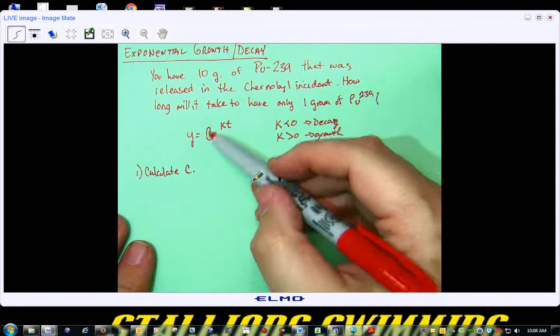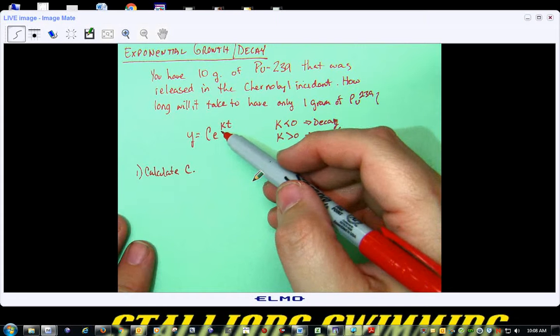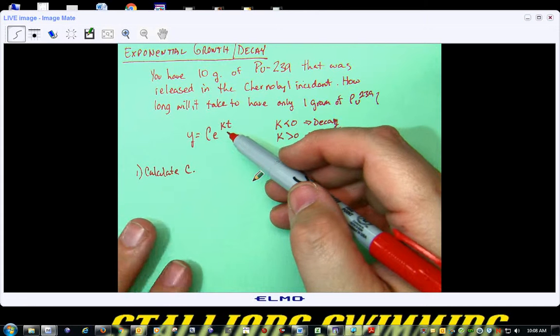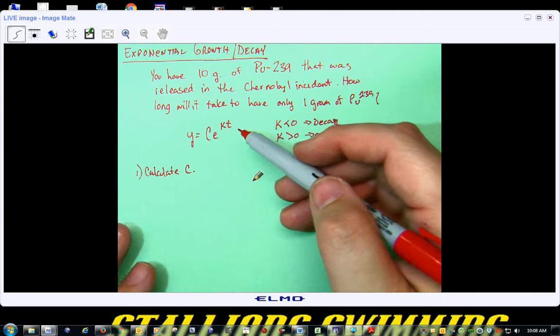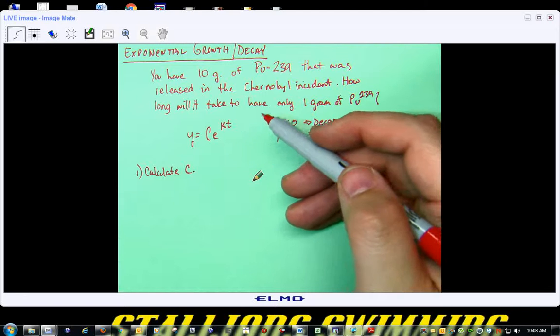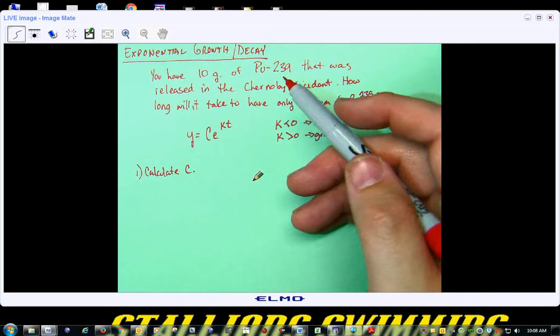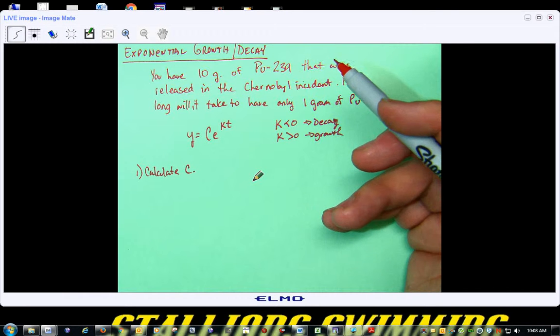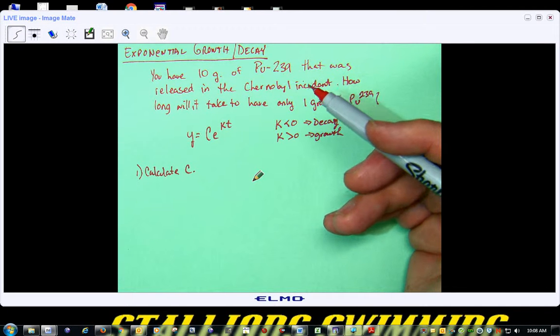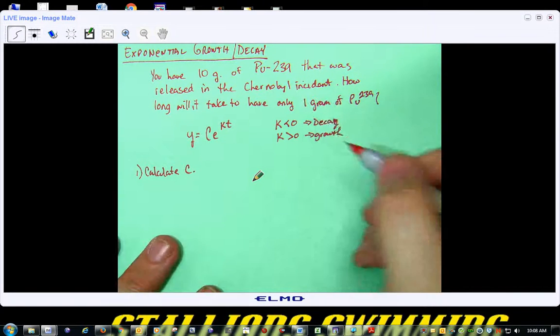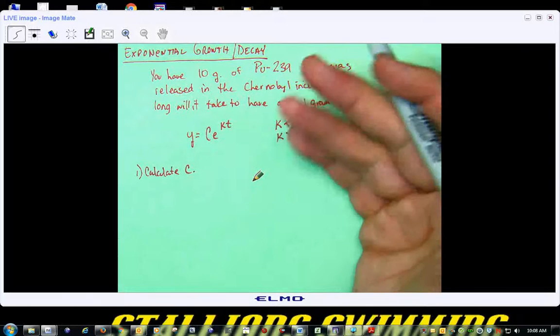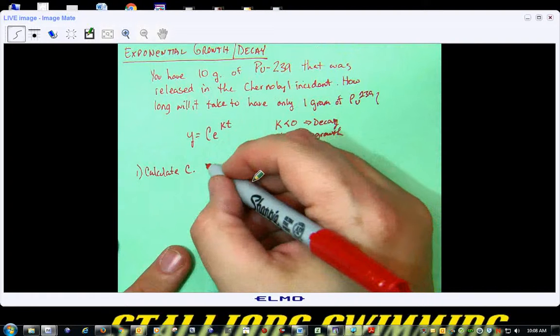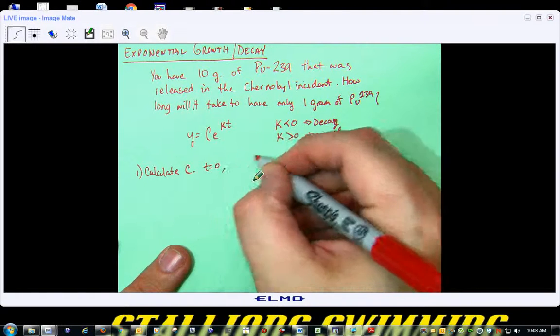C is a constant, and most of the time when you're dealing with exponential growth and decay, C is going to end up being an initial value. But what you want to do is you want to be able to calculate the C, because sometimes you're not given a time zero for this. You're given like time one or time two or something like that. So, but what we're given is, when this happened, when T equals zero, Y was equal to ten grams.